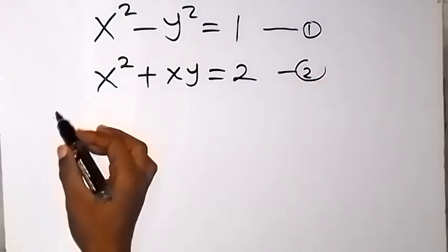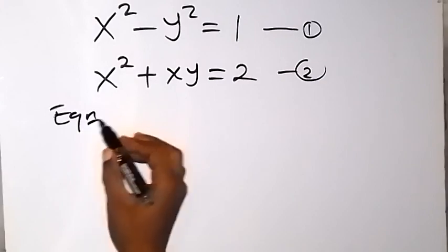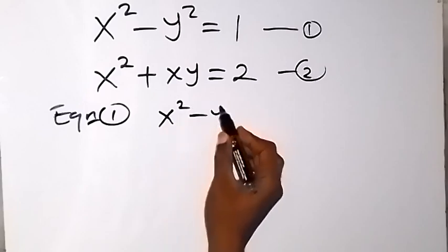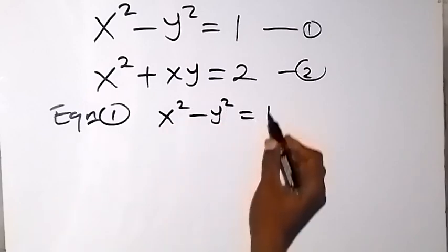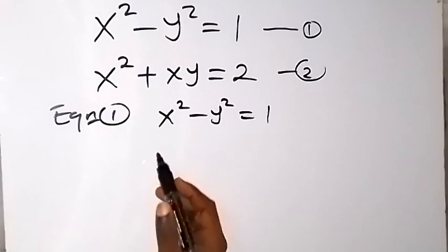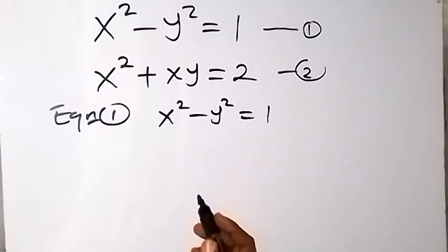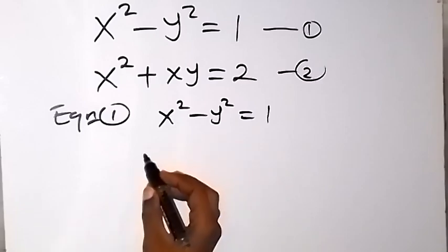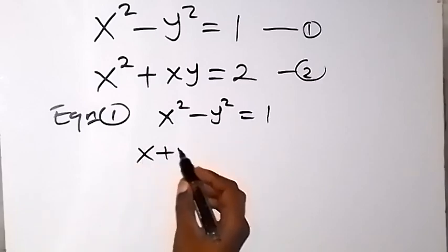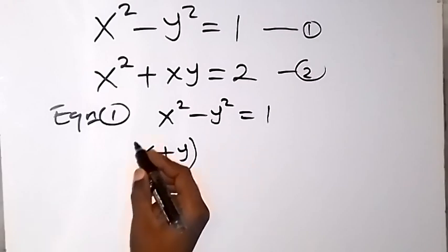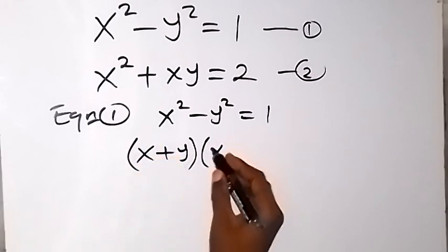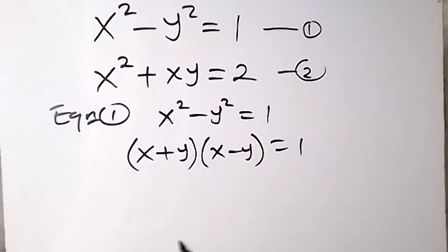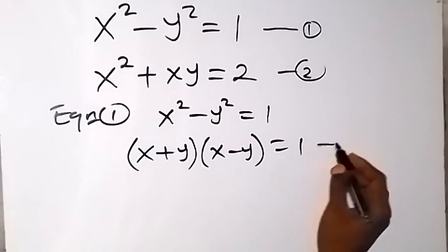Now, from equation 1, we have x squared minus y squared equals to 1. We can rewrite the left hand side in the form of a difference of two squares. When we factorize this, we have x plus y multiplied by x minus y equals to 1. Let's call this equation 3.